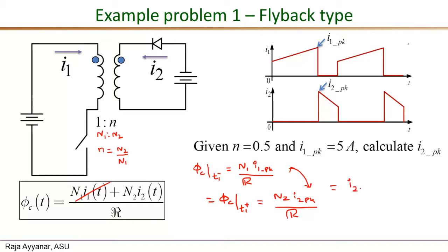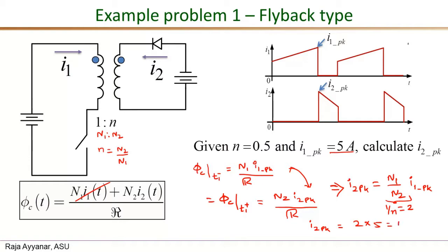Equating the two flux expressions gives I2_peak = (N1/N2) · I1_peak. Since n = N2/N1 = 0.5, we have N1/N2 = 1/0.5 = 2. Therefore I2_peak = 2 × I1_peak = 2 × 5 = 10 amperes. The peak secondary current is 10 amperes.